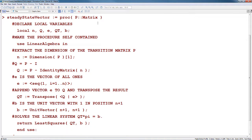A bit more about this code. P is our input, declared as a matrix. In our procedure, we also declare several local variables: n, Q, E, QT, and B. In order to make sure that this code is self-contained, we load the linear algebra package inside of this procedure using this use statement. We see 'use LinearAlgebra in', and we end near the bottom of our procedure with 'end use'.